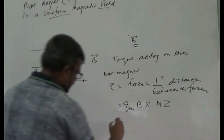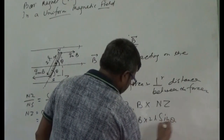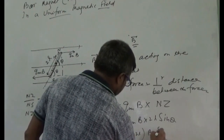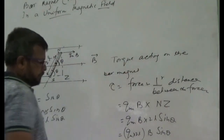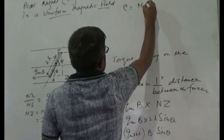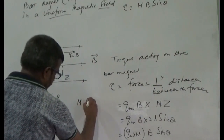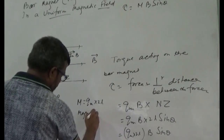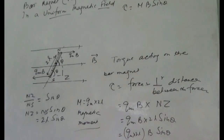Therefore you can write this as QM into B into 2L sin theta, which we may write as tau equals M times B sin theta, where capital M equals QM times 2L, which is called the magnetic moment — rather the magnetic dipole moment — of the bar magnet.